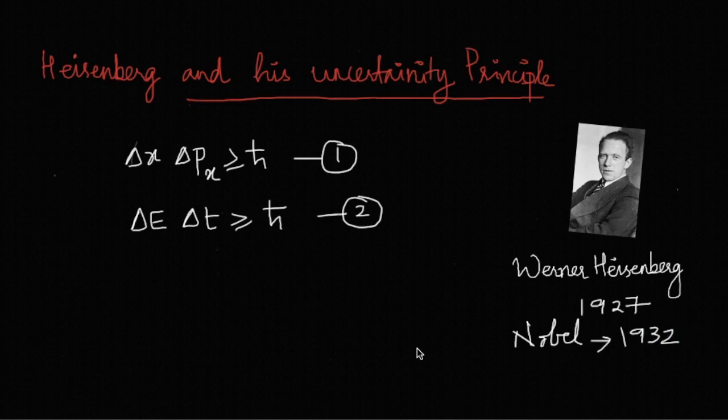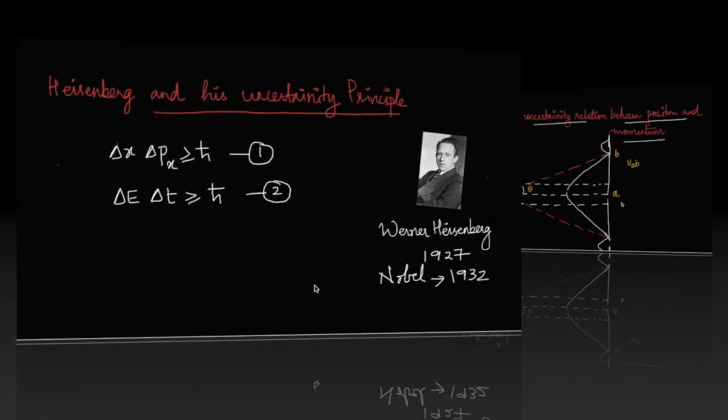So this being a central feature of quantum theory, we have to discuss it in detail. Let's move on to the derivation part, deriving the uncertainty relation between position and momentum.